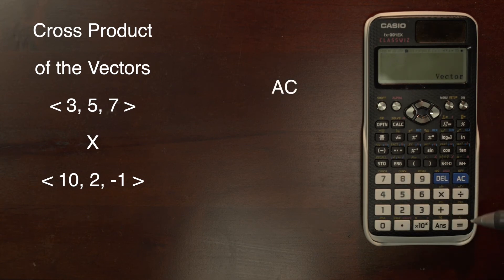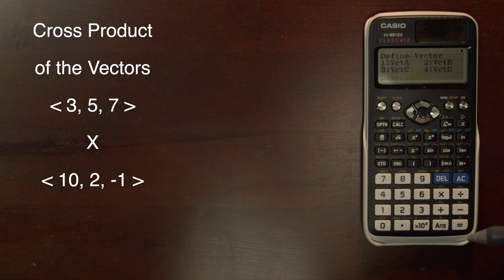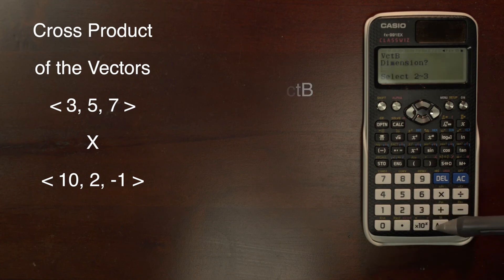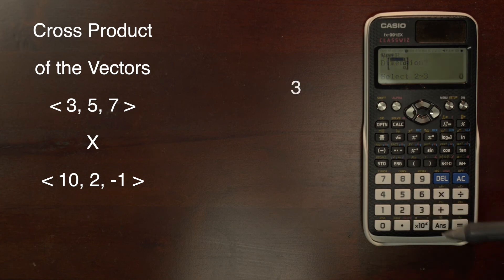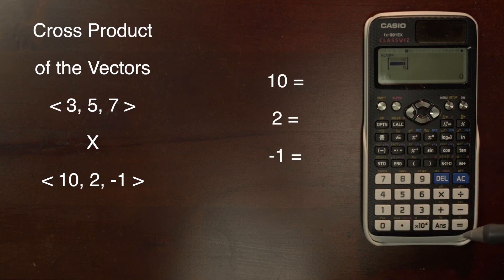Clear the screen, go back to the menu, and we are already on vector so we hit equal. We are going to define our second vector, which is three-dimensional. Enter 10, 2, and negative 1.